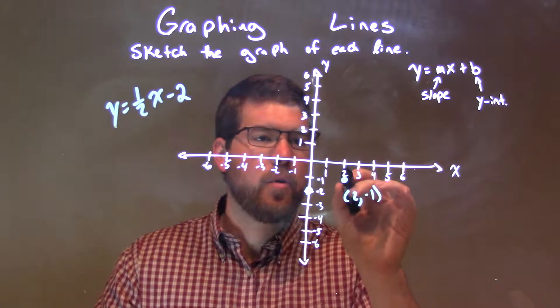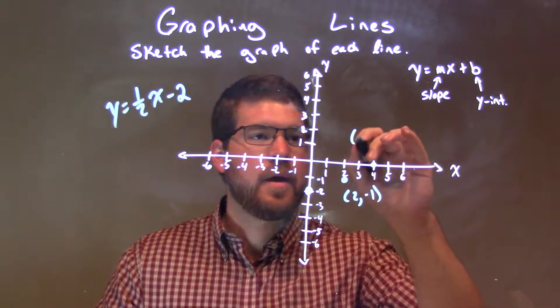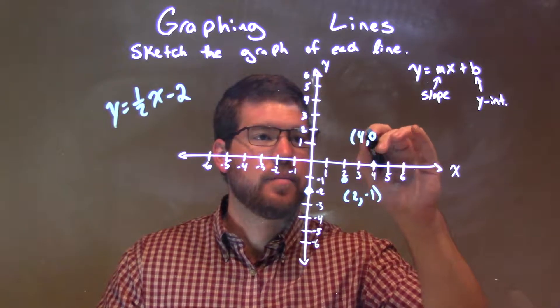Then we do it again, up one unit over two. Got another point right there, and that is four comma zero.